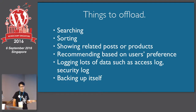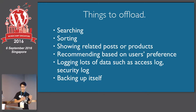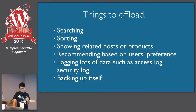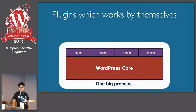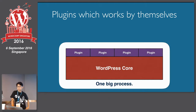These are things to offload: searching, sorting, showing related posts or related products, recommending contents based on users' preferences, and logging lots of data such as access logs or security logs. When your website needs to really scale, these things can be done inside WordPress, but when it scales you need to do these things outside of WordPress.